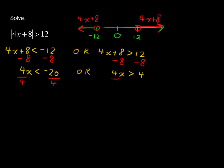So let's show that. Divide everything by 4. That's going to give us as a result x is less than negative 5, or we have x is greater than 1.